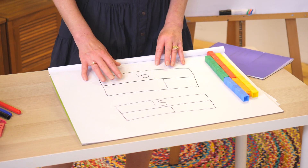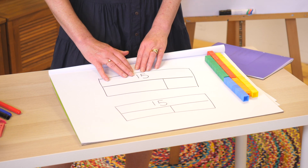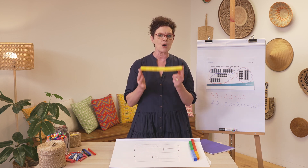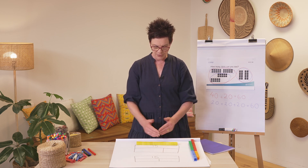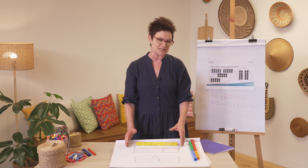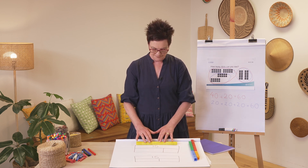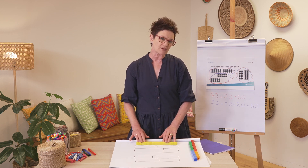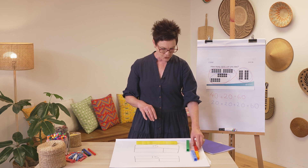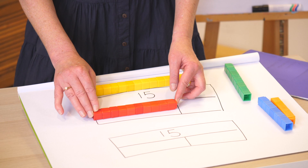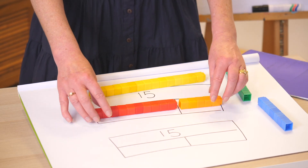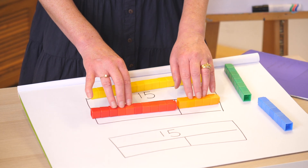I'm going to start with the number 15. I have made a group of 15 — this is our whole number and it sits in our bar model. Our bar model doesn't have to be exactly the correct size. How can I make 15 in two parts? The first way: 15 whole is a part 10 and a part 5, so I can see that 15 is a 10 and a 5.